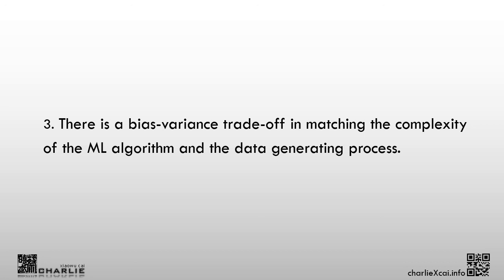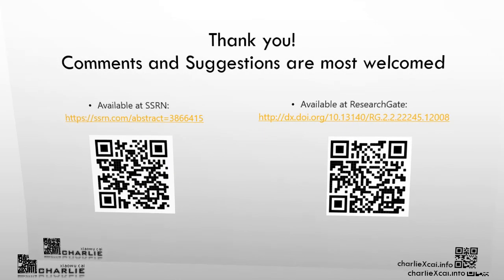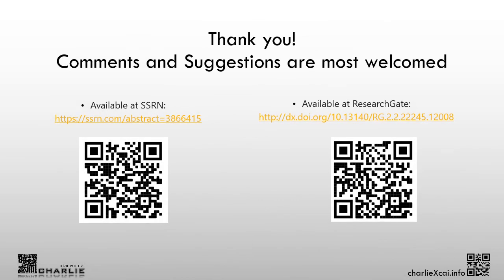Finally, our study finds that there is a bias-variance trade-off in matching the complexity of the ML algorithm to the data-generating process. We find that the most naive models and the most complex ones — such as the neural network algorithm — do not perform well out of sample compared to the decision tree type of algorithms. Thank you very much for your time. Comments and suggestions are most welcome. The paper is available on SSRN. Thank you and see you next time.